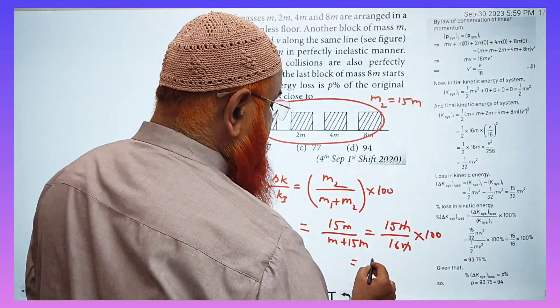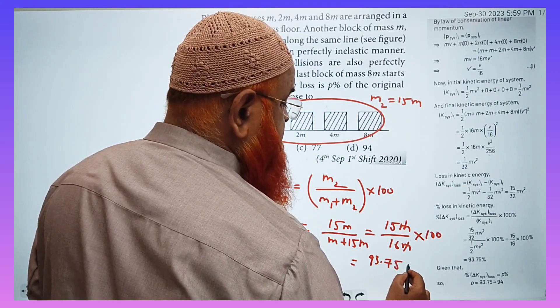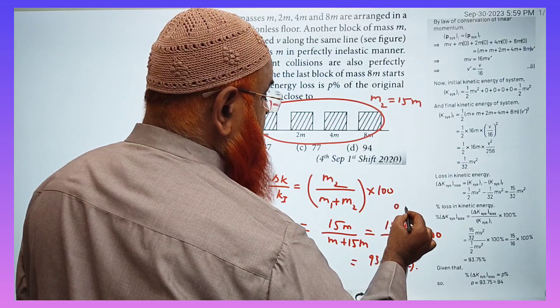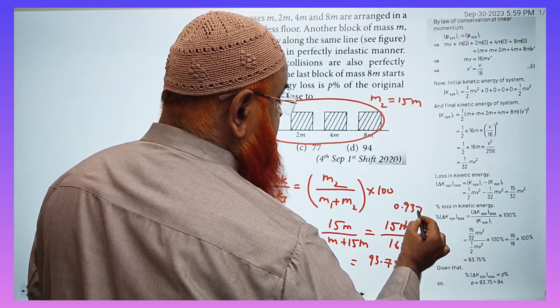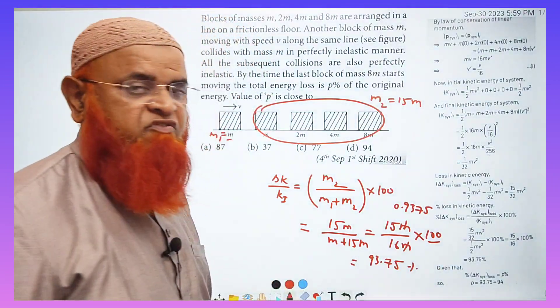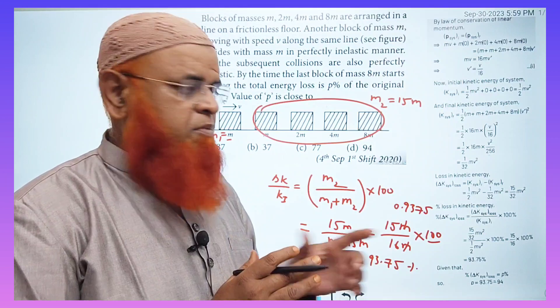So here 15 by 16, you can just calculate and see how much you are going to get. Nearly you will be getting this one as 93.75 percentage. 15 by 16, if you calculate, it is going to be 0.9375. And if you multiply with 100, it is going to be 93.75. That's it. With a single formula, single step formula, I am able to do this problem and get this answer very easily.